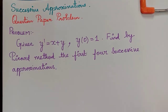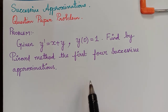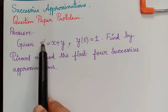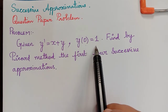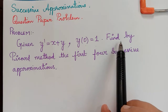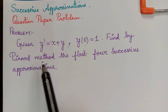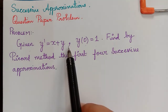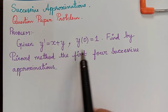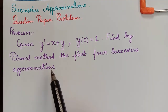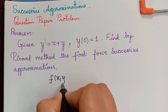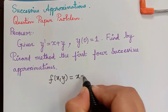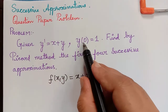Here we have a question paper problem under the topic successive approximations. From the given question, y' = x + y and the initial condition is y(0) = 1. The question is to find the first four approximations using the Picard method. We have already seen how to find successive approximations for an initial value problem, so f(x, y) = y' = x + y.